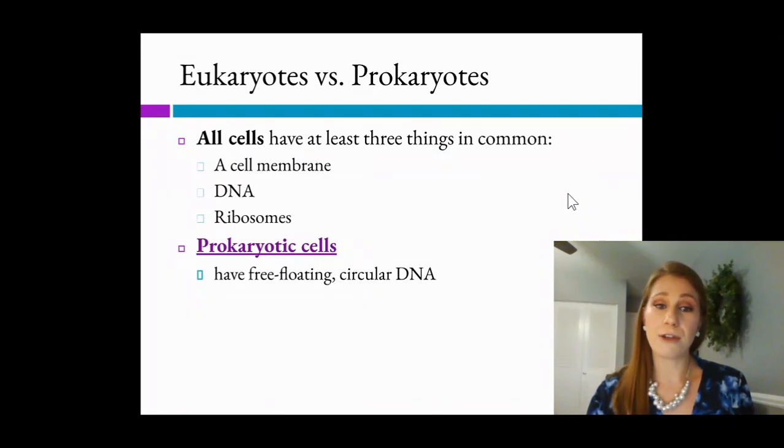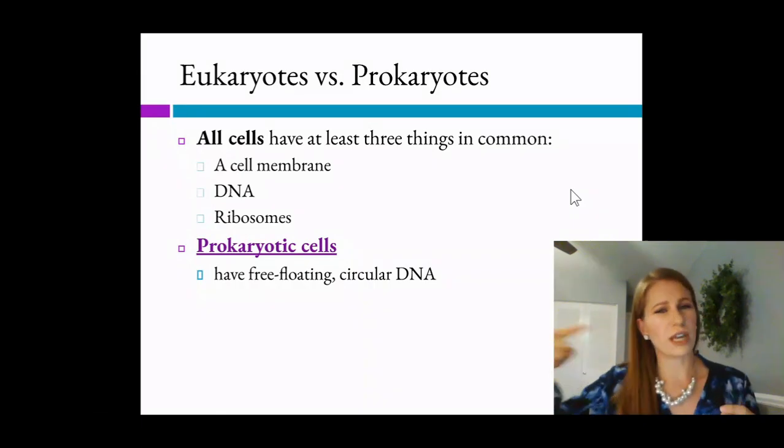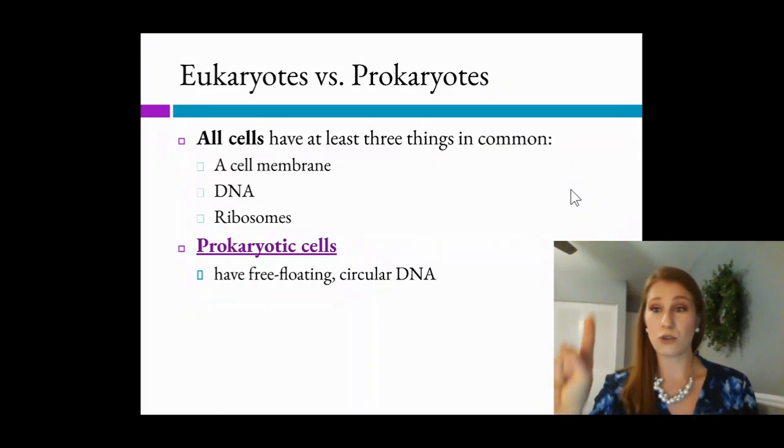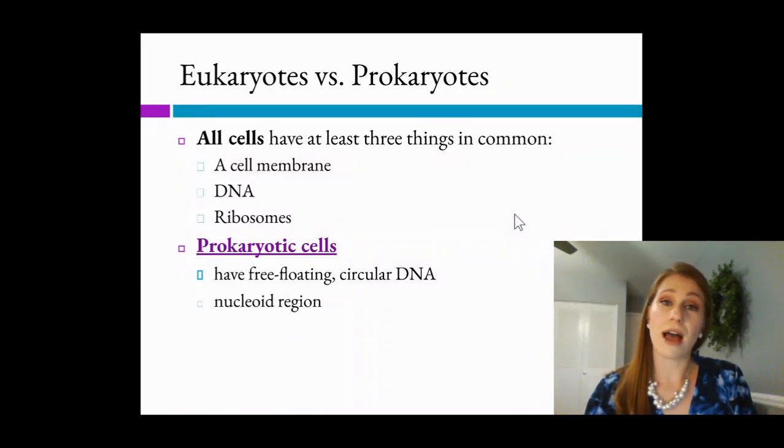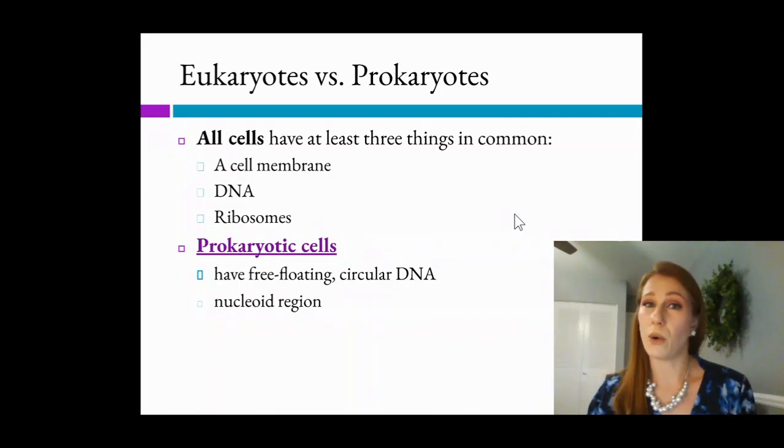Prokaryotic cells have free-floating circular DNA. Now, I don't mean that their DNA just looks kind of curly Q. I mean that it's a literal circle. It doesn't have a start or an end. It's a link. They also have their DNA located in their nucleoid region. They do not have a nucleus. This is why I use the rhyme pro says no to a nucleus and organelles.